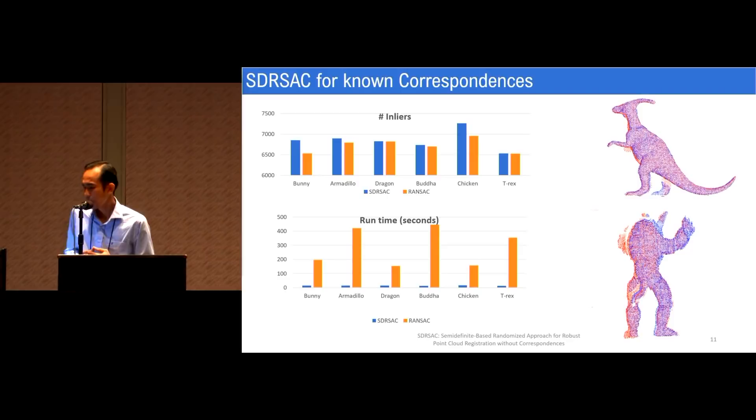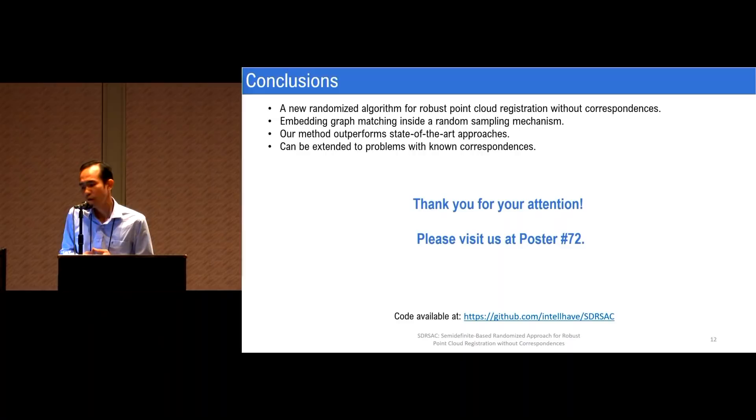We also conduct experiments on real data sets. Here we show some experiment on the Redwood data set, and the same conclusion can also be drawn. The interesting point for our approach is that this can be extended to problems with known correspondences. When we apply our approach, we can achieve comparable or higher number of inliers while the runtime is significantly faster than traditional approaches. In conclusion, in this work we propose a new randomized algorithm for robust point cloud registration without correspondences. The main idea is that we embed small problems of graph matching inside a random sampling mechanism. The experimental results show that our method outperforms current state-of-the-art approaches, and the cool thing is that our approach can be extended to problems with known correspondences.